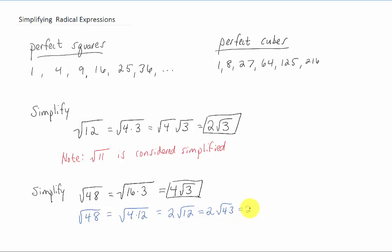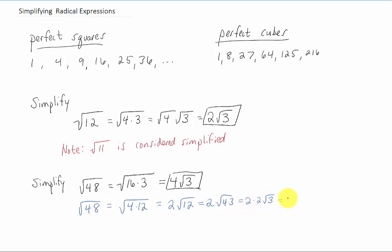We leave the two. The square root of four is two, and the square root of three just has to be left. And then you'll notice that two times two is just four, so we have four times the square root of three left over, which is the same result that we got up here.